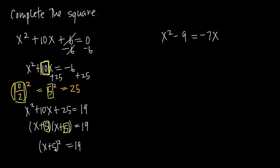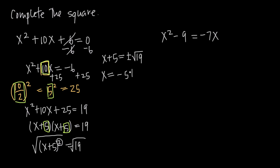We're trying to solve for x, so we take the square root of both sides. The square root and the exponent cancel, leaving x plus 5 equals positive or negative square root of 19 — we must include that plus-or-minus sign. Subtracting 5 from both sides gives x equals negative 5 plus or minus square root of 19. Written separately: x equals negative 5 plus root 19, and x equals negative 5 minus root 19.